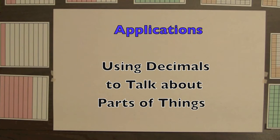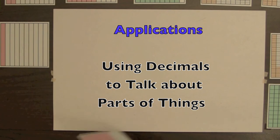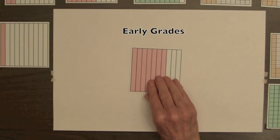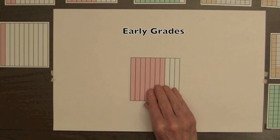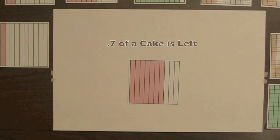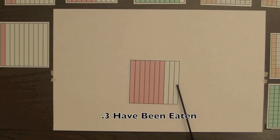Once decimals are introduced, they can be used to talk about parts of things and applications. For first and second graders, this square could represent a cake with seven tenths left. Students can make up stories, such as 3 parts of the cake have been eaten.